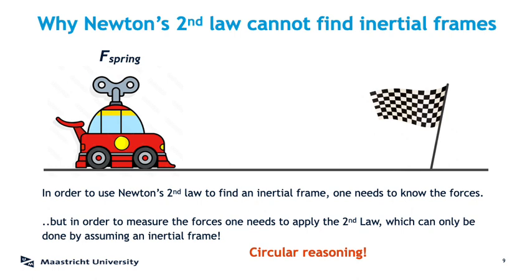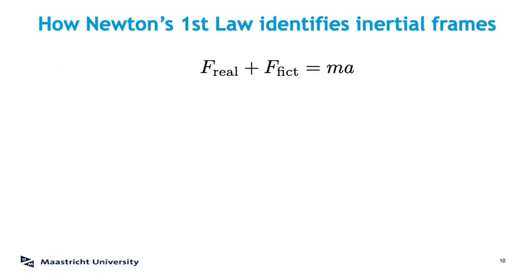The only way to know F spring beforehand is by doing a measurement assuming there was no fictitious force. There is no point in asking the spring manufacturer to tell you the force beforehand, because they had to know they were in an inertial frame before they measured the force of the spring. And the people that supply the materials from which the spring was made also had to have been in an inertial frame to find the spring constant. So no matter how you try, someone down the chain must have known they were in an inertial frame. So Newton's second law cannot find inertial frames.